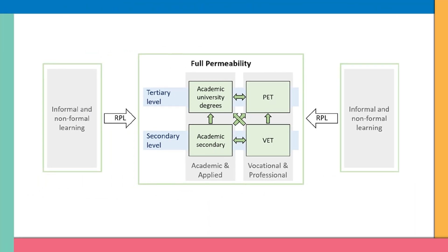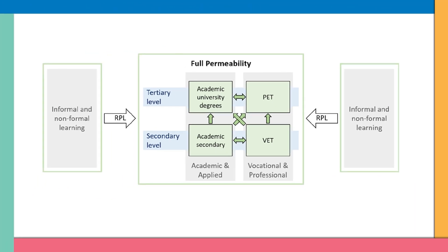The next slide shows the full permeable system — we have a separate video on that — which covers the formal education side. Informal and non-formal skills sit outside the formal education system. In developing countries this is an extremely important topic because most people have never had the chance to access a formal program, so the question is: how inclusive can we make an education system? The idea is to organize a procedure that recognizes skills learned outside school — non-formally or informally — and grants access to the formal education system. This is what we call recognition of prior learning.